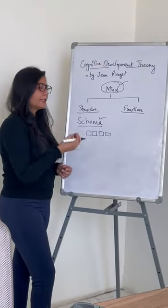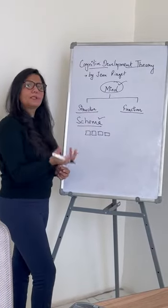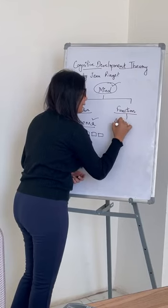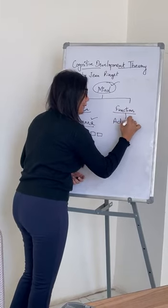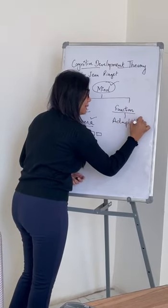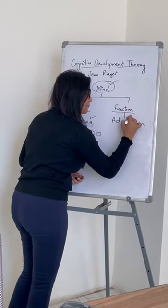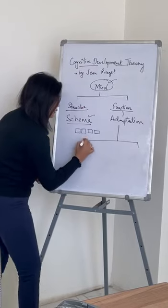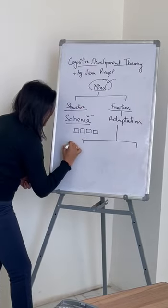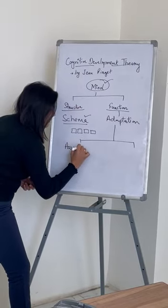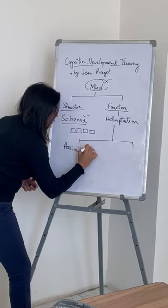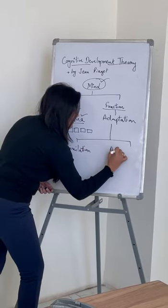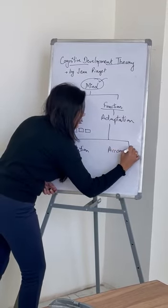They have also told us about the function — how this information is adapted into our mind. For this, they have a concept of adaptation. Within adaptation, we have two concepts: one is Assimilation, and the second is Accommodation.